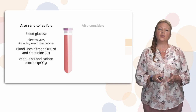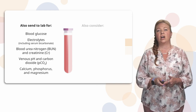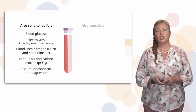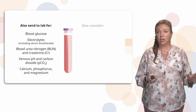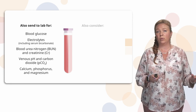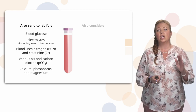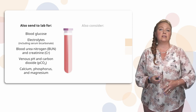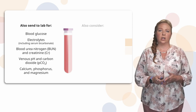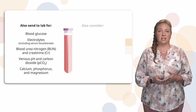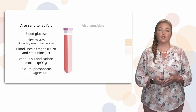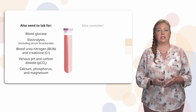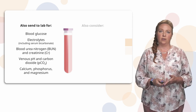We're also going to be looking at calcium, phosphorus, and magnesium. So while you're checking your point-of-care blood glucose and ketones, you're also sending these additional laboratory specimens down so we can figure out how bad the DKA is and where we need to go from here.